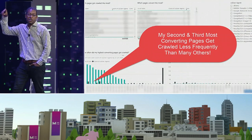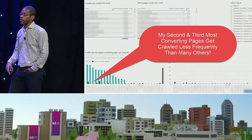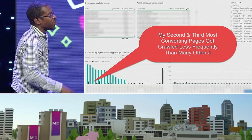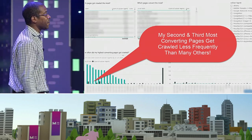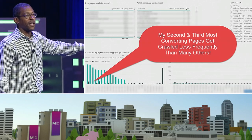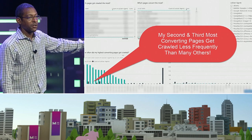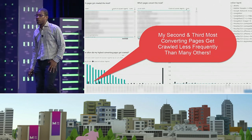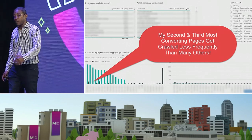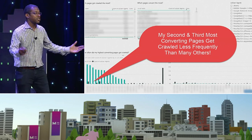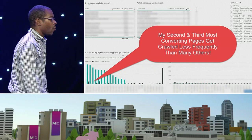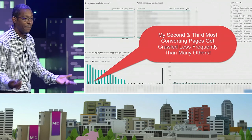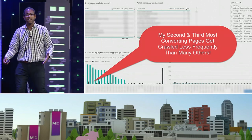Kim Jones put this together: she looked at crawl frequency for her client and compared it to their highest converting pages. The client's second and third highest converting pages don't really get crawled nearly as much as some of the other pages that don't convert as much. Now we're talking about improving crawl depth — because of money. Try saying 'crawl depth' to a CMO and they look at you like you have three heads. But say 'this page doesn't get crawled as often and it's your third highest converting page — let's get it indexed faster so you can recoup the value of any changes you make.' Now they get it.